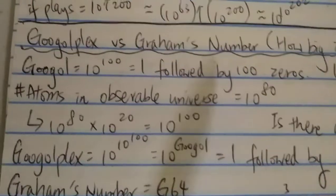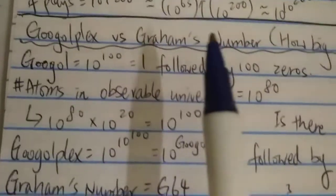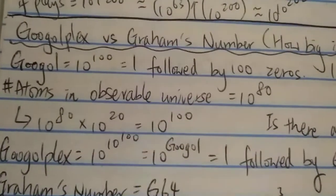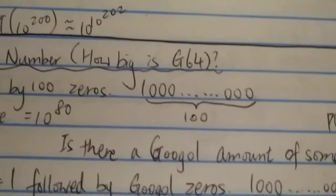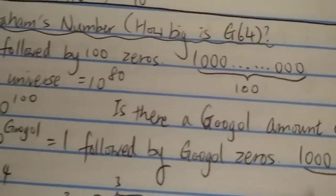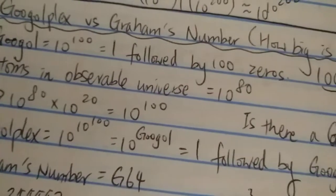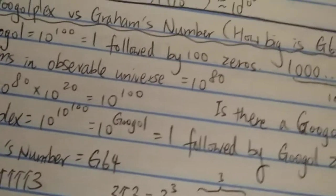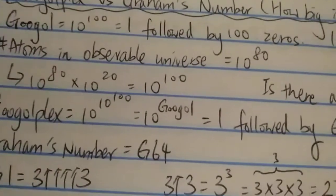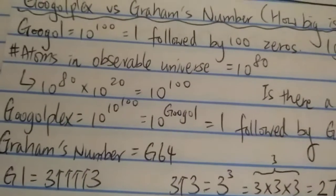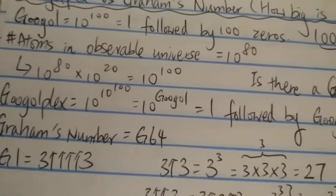First of all, we have to look at how big a Googol is, because Googolplex came from Googol. A Googol is 1 followed by 100 zeros, which is 10 to the power of 100. The number of atoms or particles in the entire observable universe is around 10 to the 80, which means a Googol is bigger than the number of atoms in the observable universe — about 10 to the 20 times bigger.